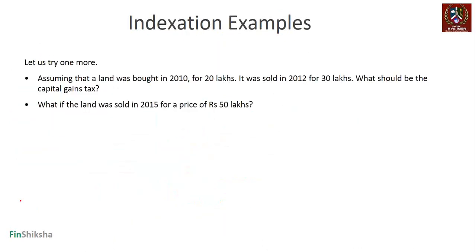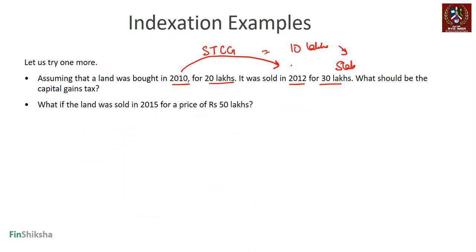Let's take more examples. Land bought in 2010 for 20 lakhs, sold in 2012 for 30 lakhs — that's only two years, so this is short-term capital gain. The short-term capital gain is 10 lakhs, taxed on the income tax slab. Since the gain is 10 lakhs, the taxpayer likely falls into the 30% slab, and a significant portion of the gain will be taxed at 30%.